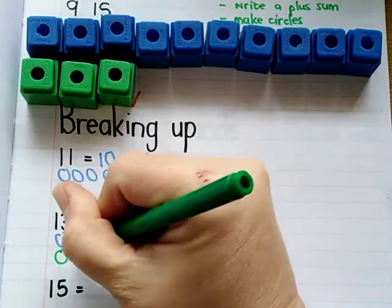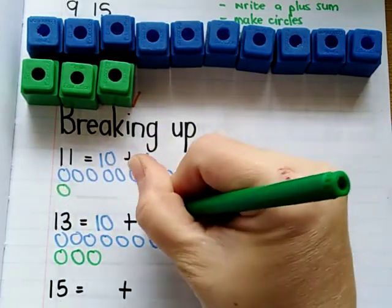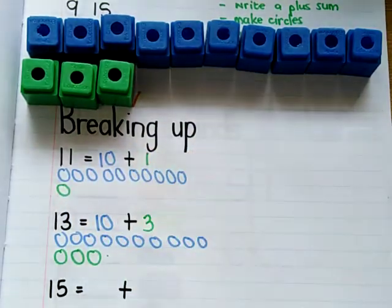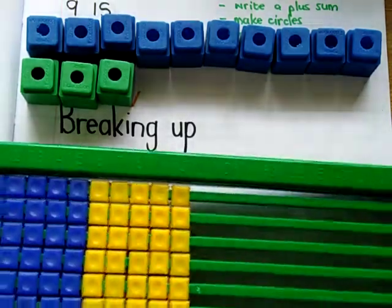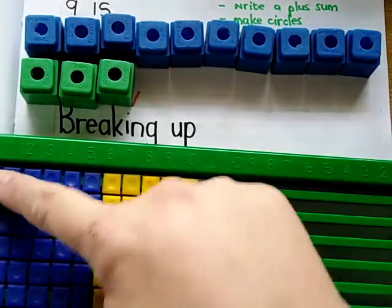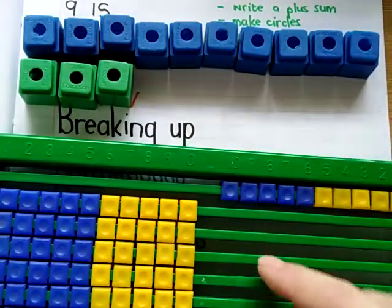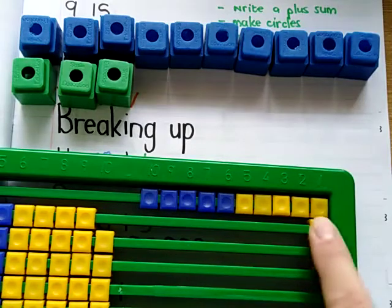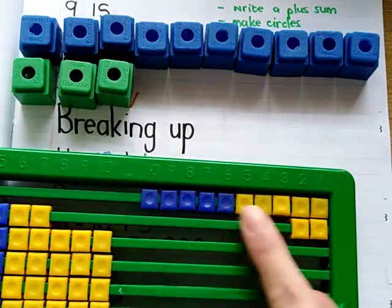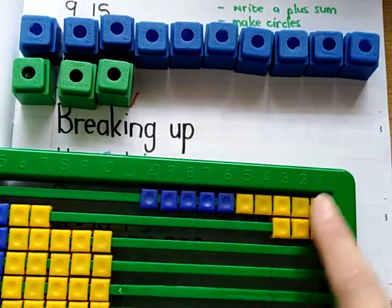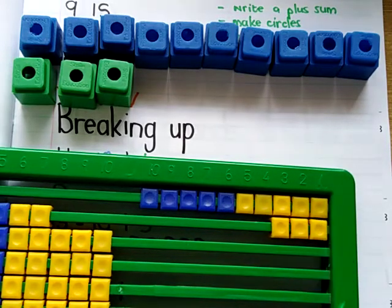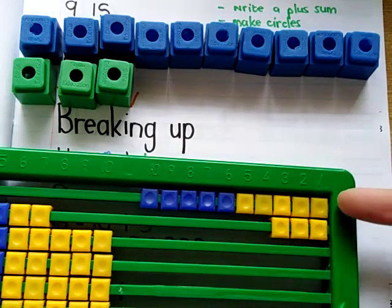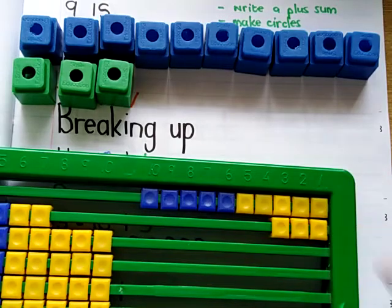When you are using a counting frame like this, you put your 10 at the top and then you count 11, 12, 13. So I can see 10 at the top and 1, 2, 3 at the bottom. We want to see that 10 group and then whatever else goes with it.